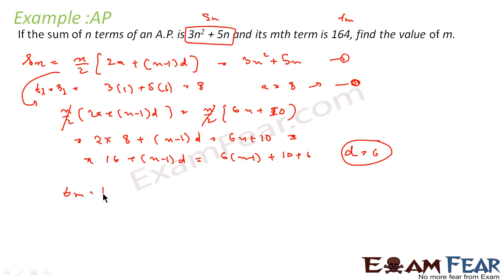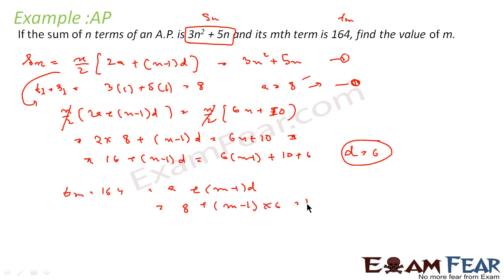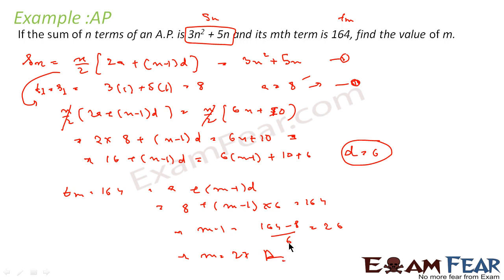We are told Tm equals 164, so a plus (m minus 1) into d equals 164. Substituting a equals 8 and d equals 6: 8 plus (m − 1) times 6 equals 164. So (m − 1) equals (164 − 8) by 6 equals 26, giving m equals 27.